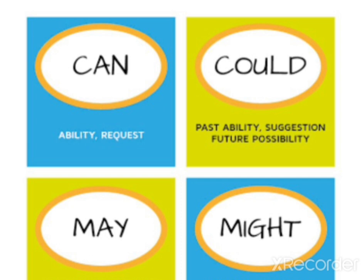If you don't understand anything, pause the video, go back, and listen again, because these things are very important to understand modal verbs. The third modal verb is 'may'; it is used for permission or future possibility. 'May I come in?' — permission. 'I may visit a foreign country' — future possibility. The fourth modal verb is 'might.' 'I might be present in the organization.' 'She might visit there' — possibility. To summarize: 'can' — ability and request; 'could' — past ability, suggestion, or future possibility; 'may' — permission or future possibility; 'might' — future possibility.